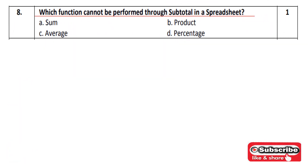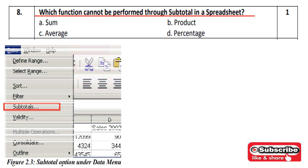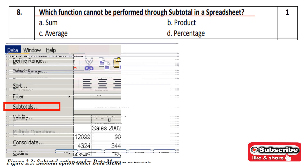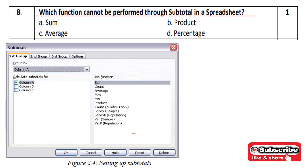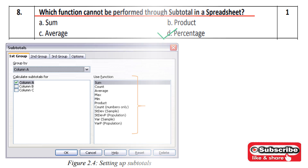Question 8: Which function cannot be performed through sub-total in a spreadsheet? In the data tab there is a sub-total function. In sub-total there are many functions: sum, count, average, max, minimum, product, count numbers. The question can come in any format so you should go through the list. The percentage function is one that we cannot do in sub-total. So option number D is correct.